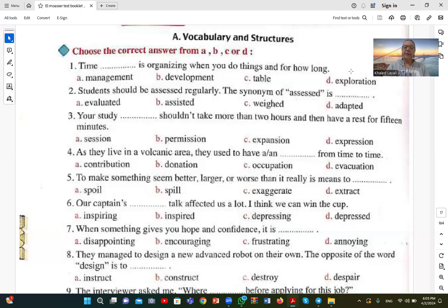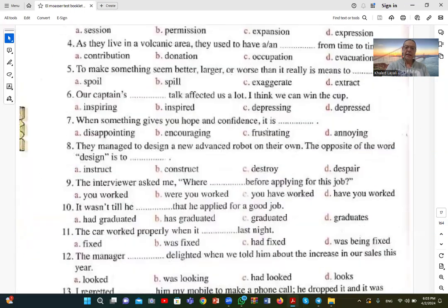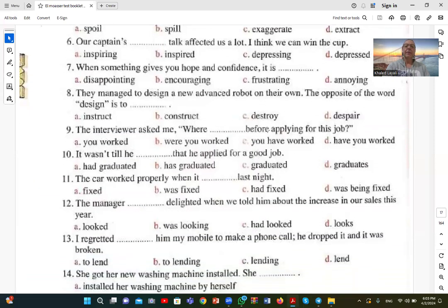Number seven: When something gives you hope and confidence, it is encouraging. Something that gives you confidence and hope. Number eight: They managed to design a new advanced robot on their own. The opposite of the word design is to destroy. Design means to build and create something, the opposite is destroy, which means to demolish. So C is the closest to the opposite of design.